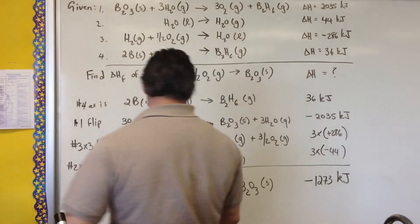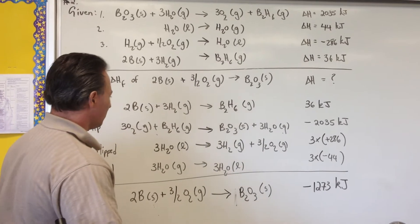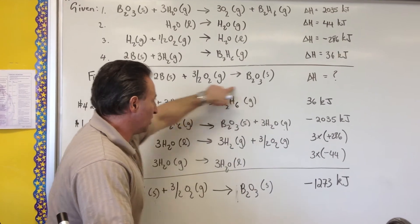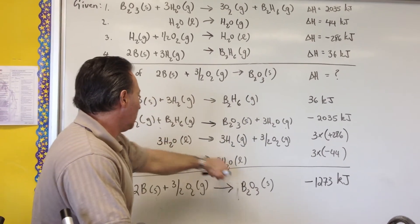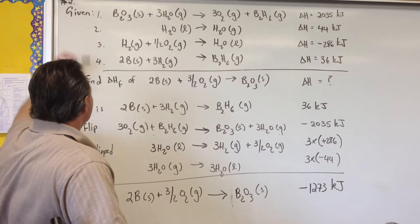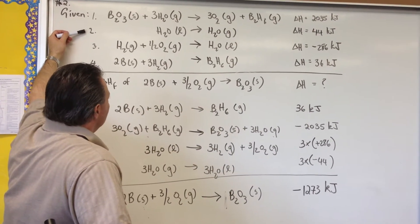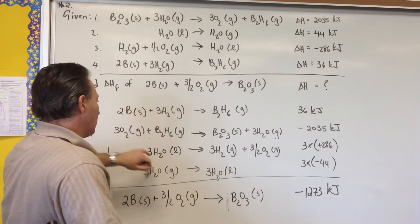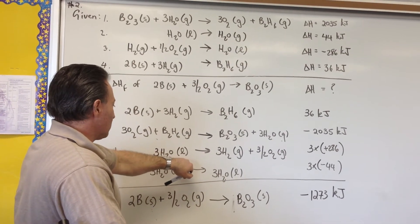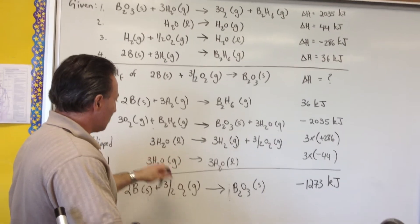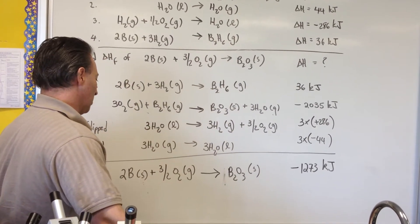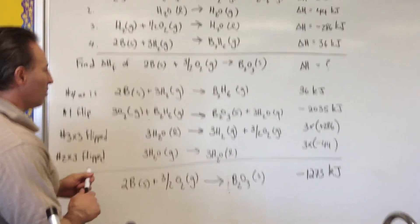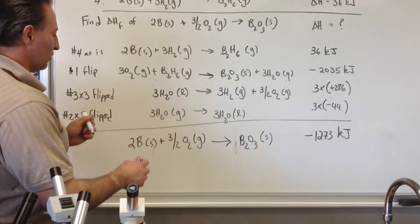And then the last step, I want to eliminate the liquid water that appears in equation number three, because there's no liquid water in the target equation. So by eliminating liquid water by using equation number two, which is the only one that contains liquid water, I again had to flip it and multiply it by three, because there's three liquid waters in equation number three. Once I've done all those steps, I can start crossing out everything that I don't want to appear in the target equation.